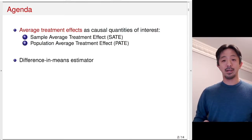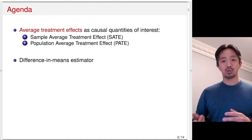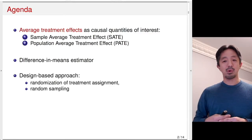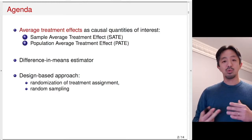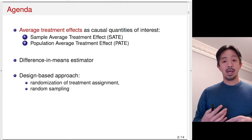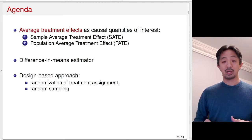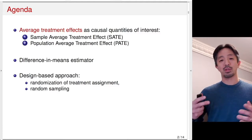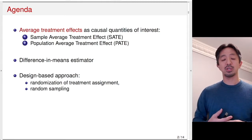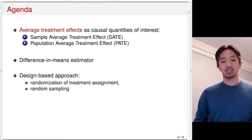We'll look at the simple difference-in-means estimator, comparing the means between treatment and control groups. We'll show that using the design-based approach developed by Jerzy Neyman, which focuses on the use of randomization of treatment assignment and random sampling of units from a population to make statistical inference. This is similar to a permutation test where the actual randomization is used to justify statistical inference.